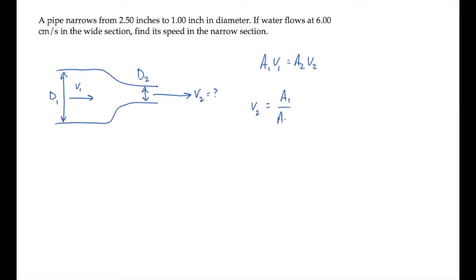Solve this for v2, the flow speed in the narrow part, to see that it equals the ratio of the areas times v1.